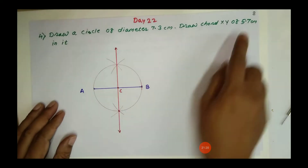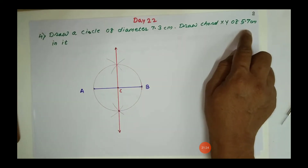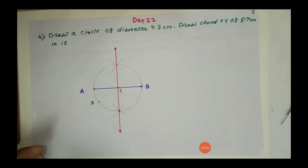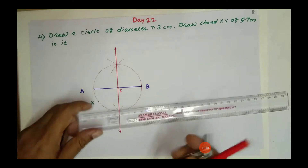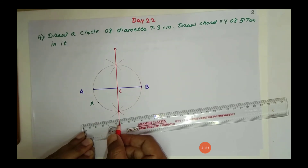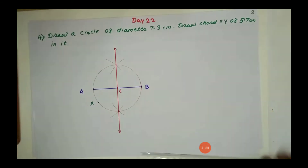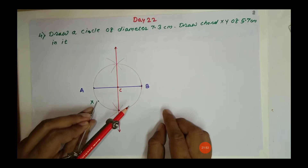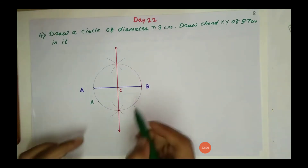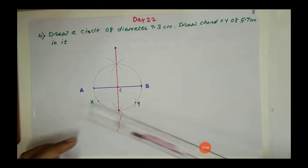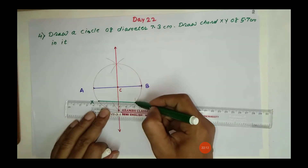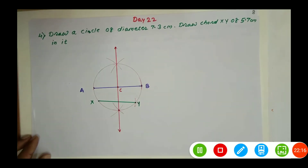Now draw chord XY of 5.7 cm. Set 5.7 cm on the compass, mark point X on the circle, then with the same distance mark point Y on the circle. Join X and Y — this is chord XY of 5.7 cm. That completes your 22nd day.